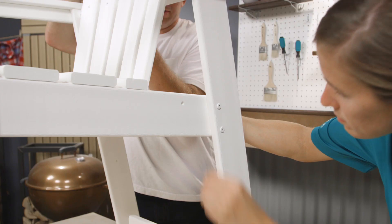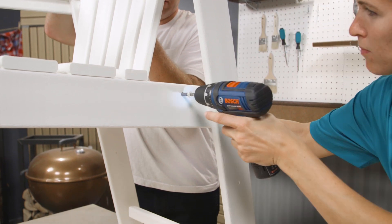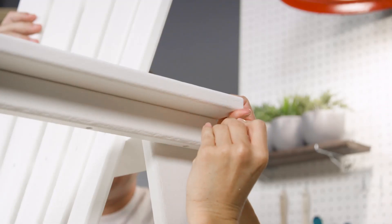Fit the back piece between the side frames and insert one 2 inch screw through the left side of the seat and one 3 inch screw through the left side frame.